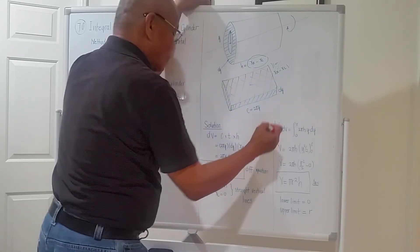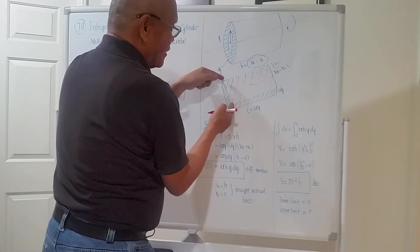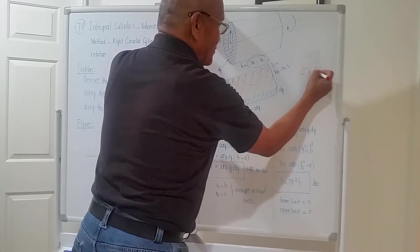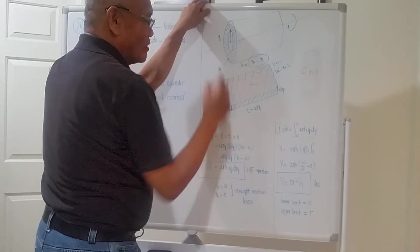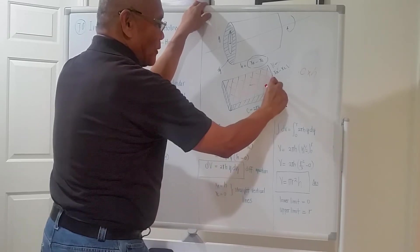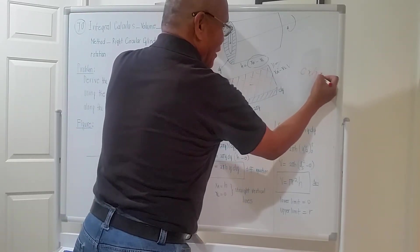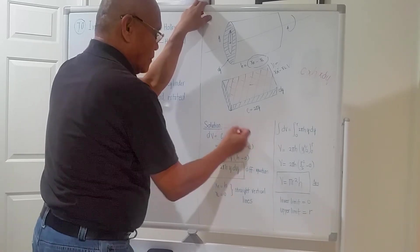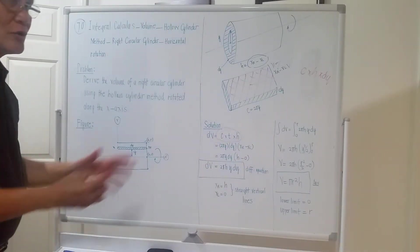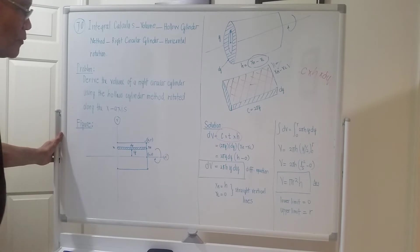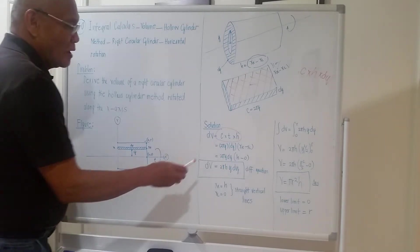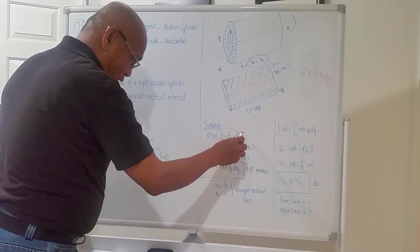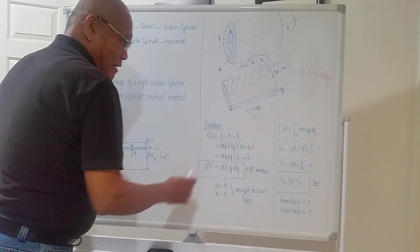This area here is circumference times height. To take the volume, multiply that by the thickness dy. Therefore: dV = 2πy · dy · height, where height varies as dy moves.